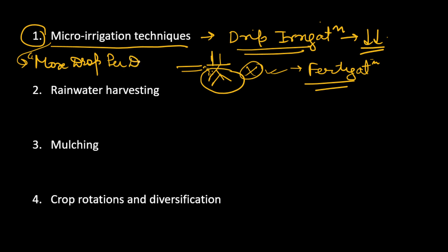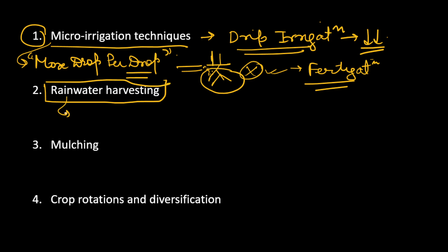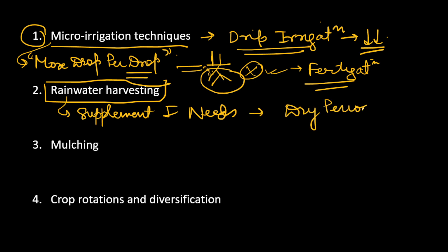Secondly, we can highly focus on rainwater harvesting. What rainwater harvesting does is collect and store water. This stored water will supplement our irrigation needs during dry periods when there is scarcity of water. So in these periods, we can use the water harvested through rainwater harvesting.